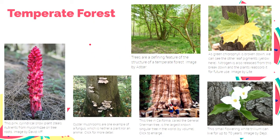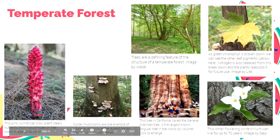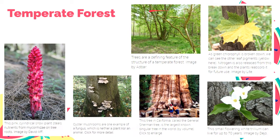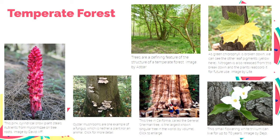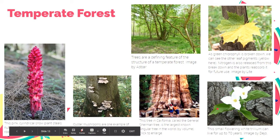We have here more flora of the temperate forest. We see here a pink cylindrical snow plant, which steals nutrients from the mycorrhizae on tree roots. Mycorrhizae is actually a relationship between fungi and roots of a seed plant that allows them to survive with each other. We can see trees as a defining feature of a temperate forest — green chlorophyll is broken down and we can see other leaf pigments such as yellow. Eventually it will be shed during fall or autumn. Mushrooms can also grow on trees. The General Sherman tree, one of the largest known singular trees in the world, is actually found in a temperate forest. Small flowering plants can also be found here.